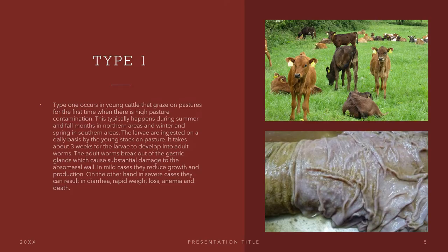Now let's talk about the different types of ostertagiosis. Type 1 is not as severe, but it does occur in young cattle grazing on pastures for the first time under high pasture contamination. This typically happens during summer and fall months in northern areas and winter and spring in southern areas. The larvae are ingested daily and it takes about three weeks to develop into adult worms. The adult worms break out of the gastric glands, causing substantial damage to the abomasal wall. In mild cases, they reduce growth and production; in severe cases, they can result in diarrhea, rapid weight loss, anemia, and death.